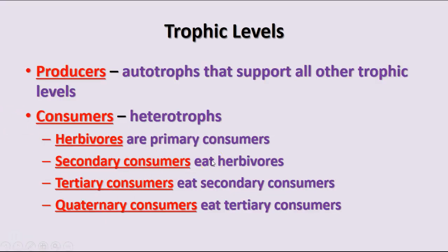Producers are the autotrophs that support all the other levels. That can be plants, algae, chemosynthetic bacteria, or photosynthetic bacteria — whatever produces energy without having to get it from another organism, using energy from some other source, whether from the sun or from chemical compounds, to produce food.